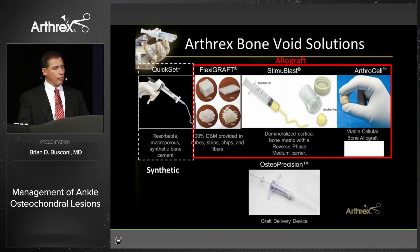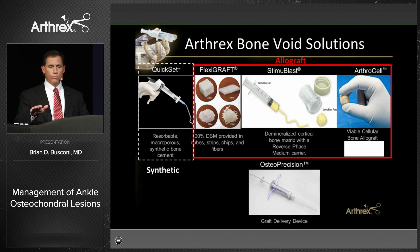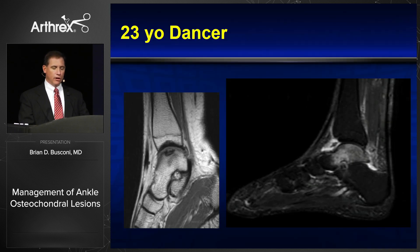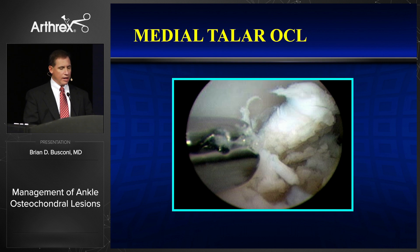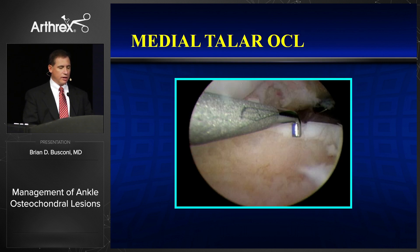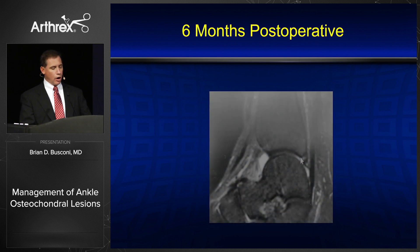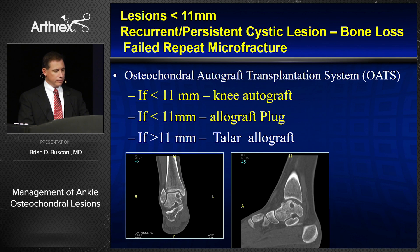In terms of bone void solutions, I like to use Stimulblast, although Arthracel is available — I don't have it in my practice as of yet. I lay that down to help create a new bone model and then fill with the biocartilage. Looking at this large lesion, six months postoperatively you can see we've done a great job of taking care of the bone marrow lesion.